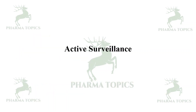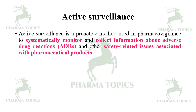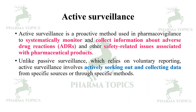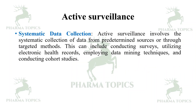Active surveillance is a proactive method used in pharmacovigilance to systematically monitor and collect information about ADRs and other safety-related issues associated with pharmaceutical products. Unlike passive surveillance, which relies on voluntary reporting, active surveillance involves actively seeking out and collecting data from specific sources or through specific methods, including conducting surveys, utilizing electronic healthcare records, employing data mining techniques, and conducting cohort studies.